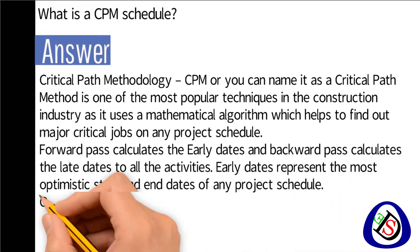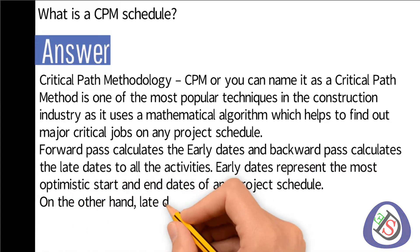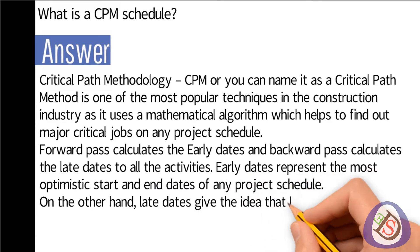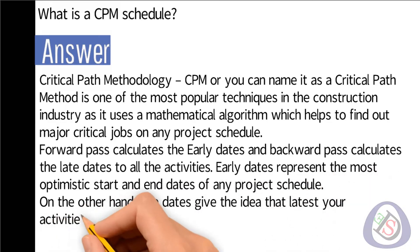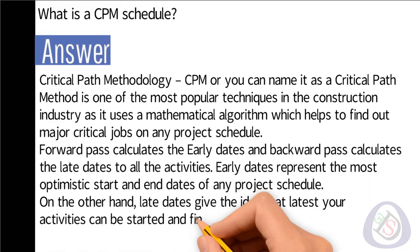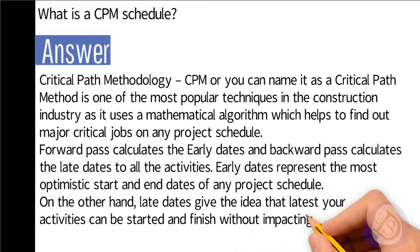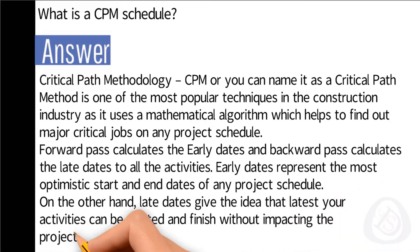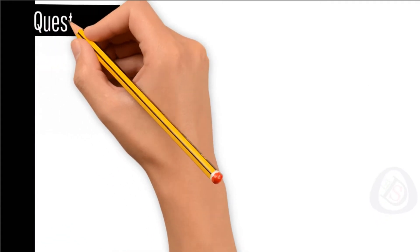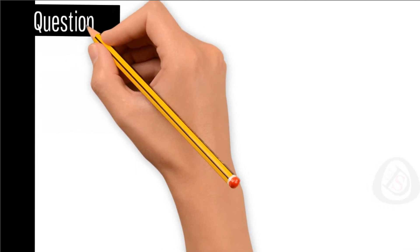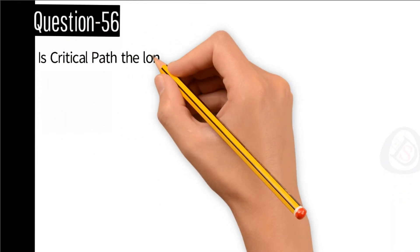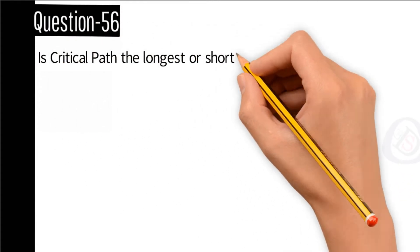Early dates represent the most optimistic start and end dates of any project schedule. On the other end, late dates give the idea of the latest an activity can be started and finished without impacting the project finish date.